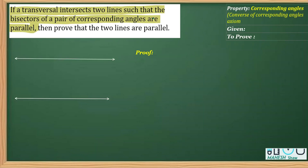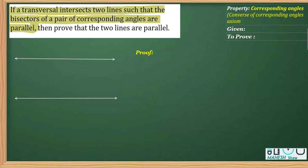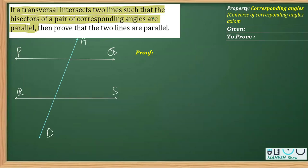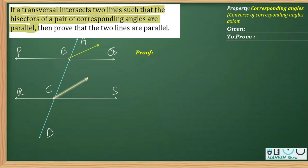I draw two lines named PQ and RS, and I draw a transversal AD intersecting the two lines at points B and C. The bisectors of the corresponding angles at B and C are BE and CG, and these two bisectors are parallel.